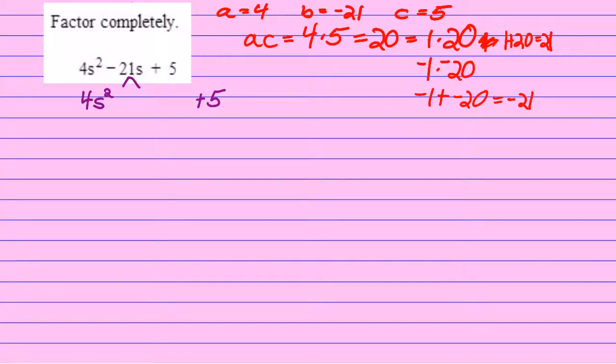So let's do that. I'm going to split 4s squared into, and I think I'll write this in red, 4s squared into minus 1s minus 20s.